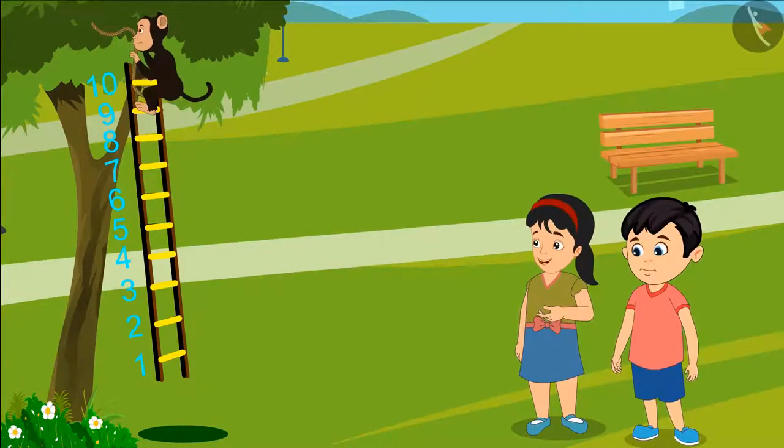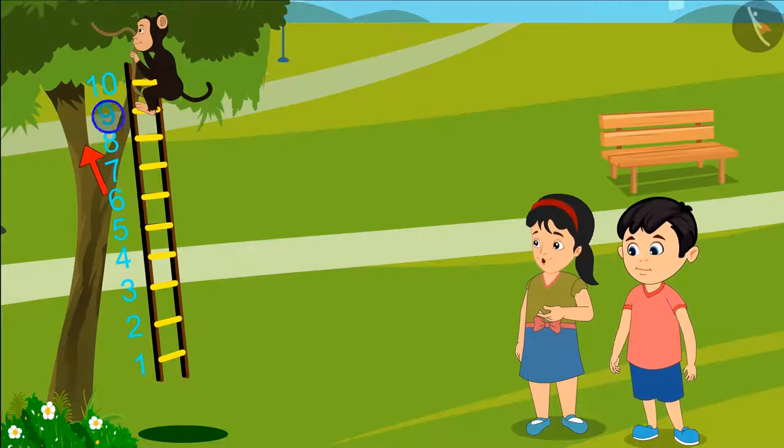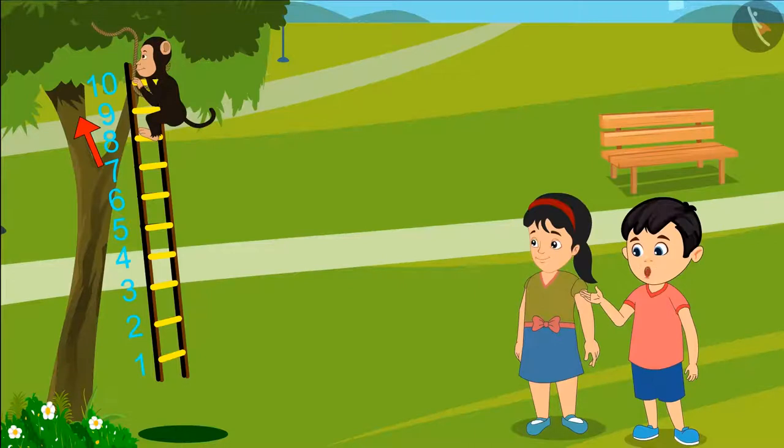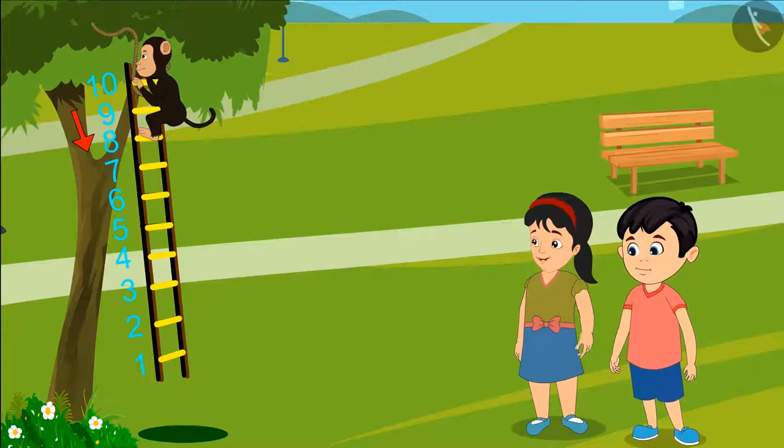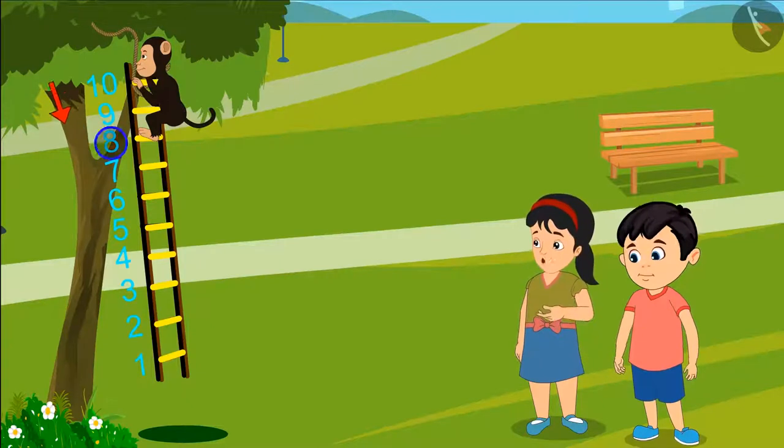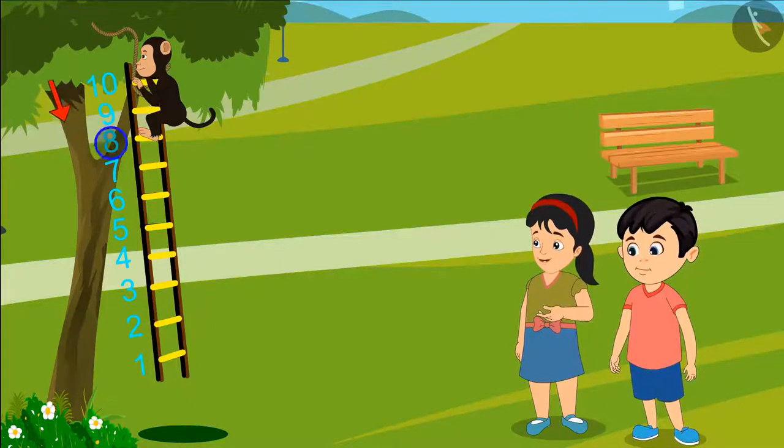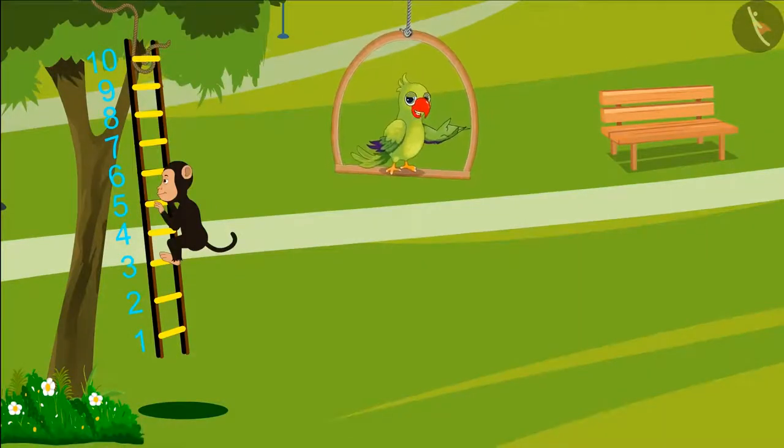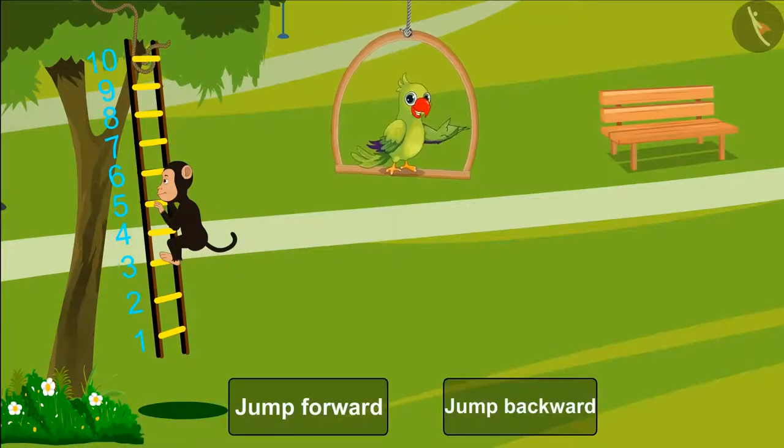Chotu, now he has leaped his way to the ninth step. Can you see? Pinkie, see. He has taken a step back. So on which step is he now? The step before the ninth step on the ladder is the eighth step. So it means he has reached the eighth step, right, Chotu? So kids, did you see how the monkey is jumping forward and backward?